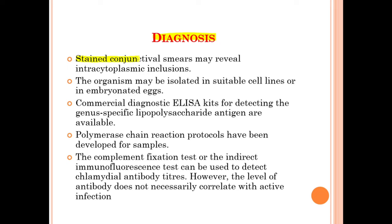Moving on, we will discuss about the diagnosis of feline chlamydiosis. Stained conjunctival smears may reveal intracytoplasmic inclusions. The organism may be isolated in suitable cell lines and in embryonated eggs. Commercial diagnostic ELISA kits for detecting genus-specific lipopolysaccharide antigens are available. PCR protocols have been developed for the samples. The complement fixation test or the indirect immunofluorescent test can be used to detect chlamydial antibody titers; however, the level of antibodies does not correlate with active infection.